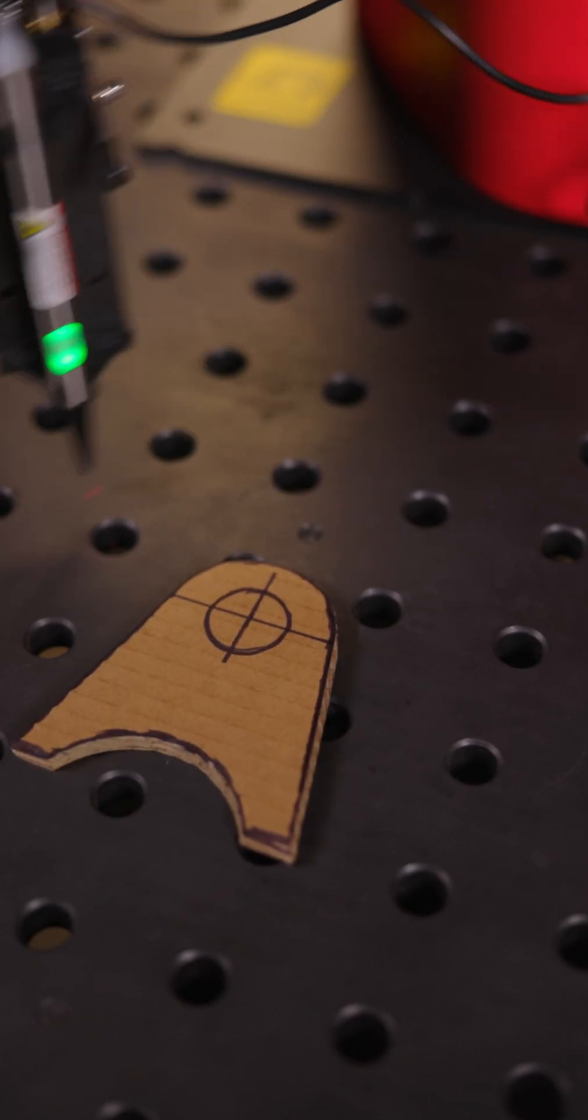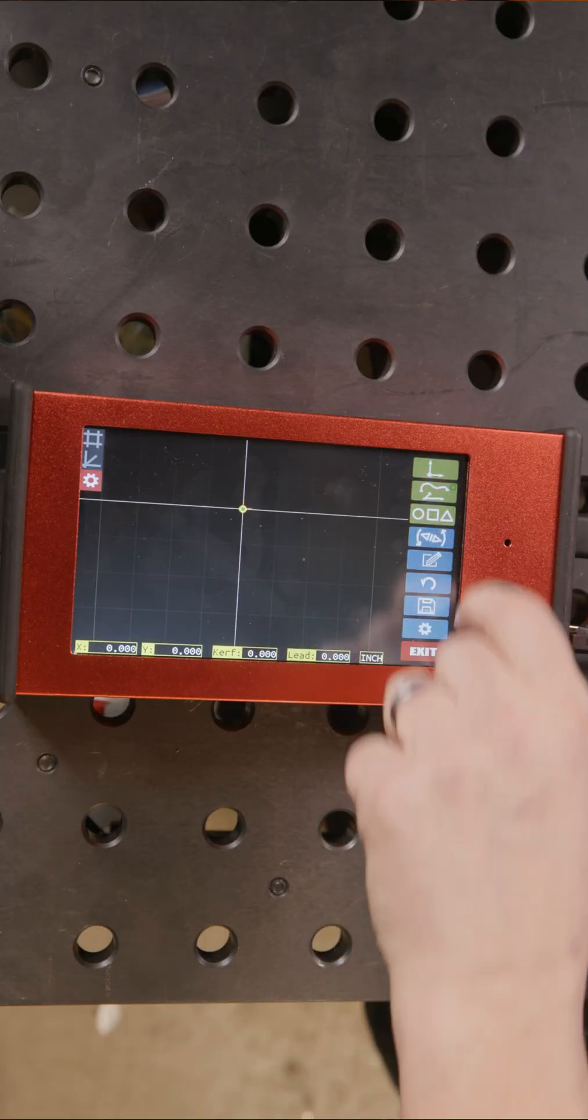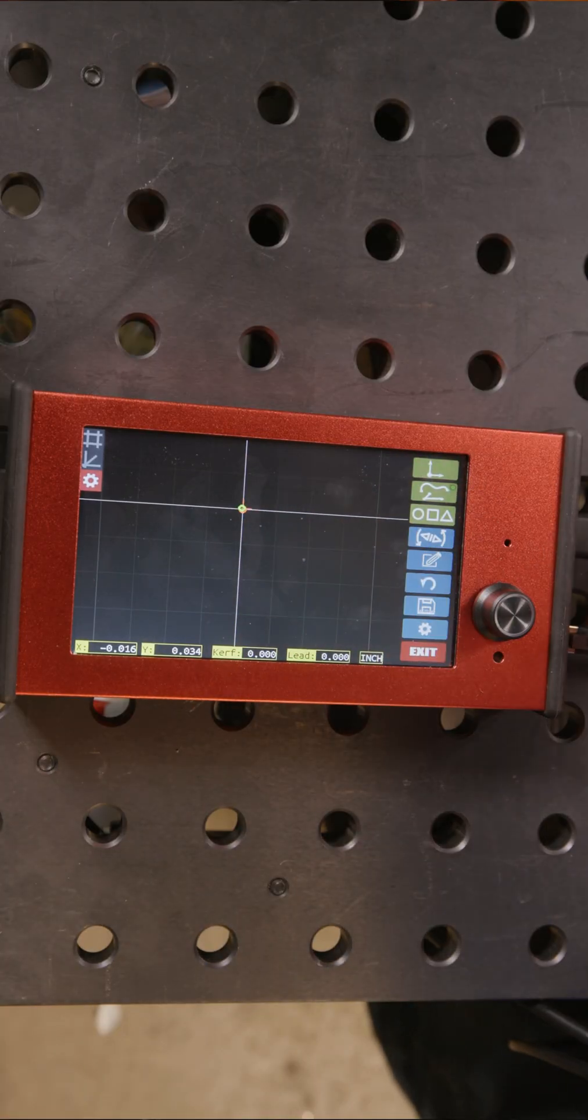First thing, always choose your origin first, so I'm going to pick right in the middle of the circle, choose my zero point. Now we're lined up in the center there.